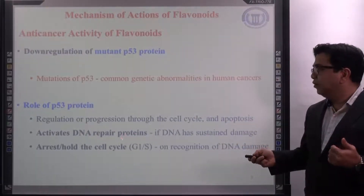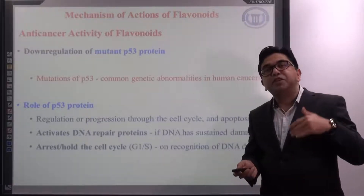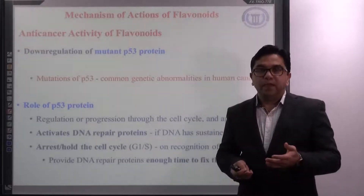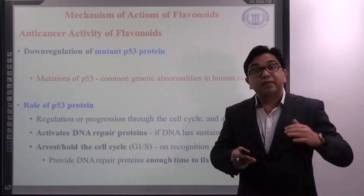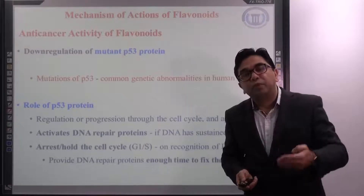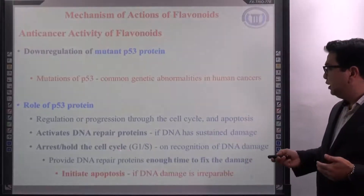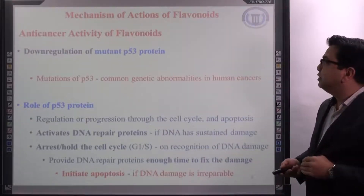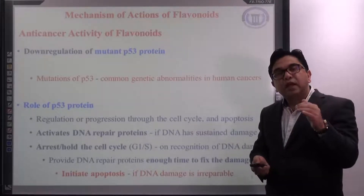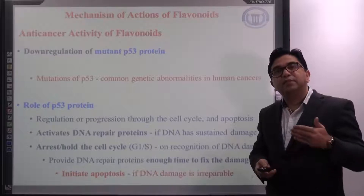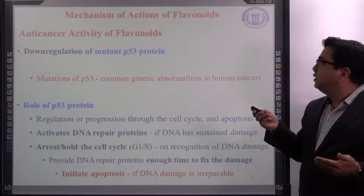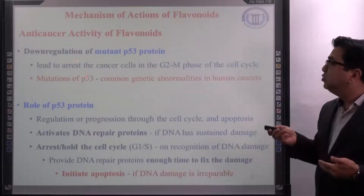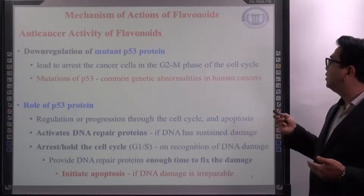P53 not only activates DNA repair proteins — it also halts the cell cycle temporarily to provide sufficient time for those repair proteins to fix the damage. If the cell is not able to repair the DNA, then P53 initiates apoptosis, that is programmed cell death, to kill the abnormal cell without allowing it to progress further. In cancer, P53 proteins undergo mutation, as a result of which cancer cells are able to bypass apoptosis. Flavonoids act as anti-cancer agents by down-regulating those mutant P53 proteins, leading to arrest or killing of cancer cells in the G2 to M phase of the cell cycle.